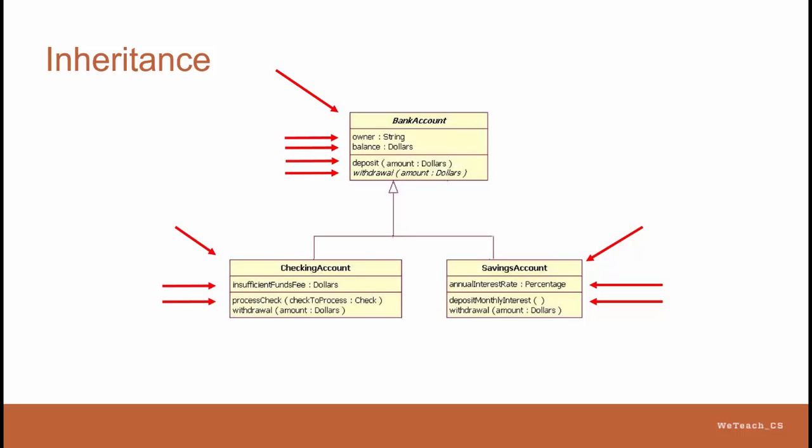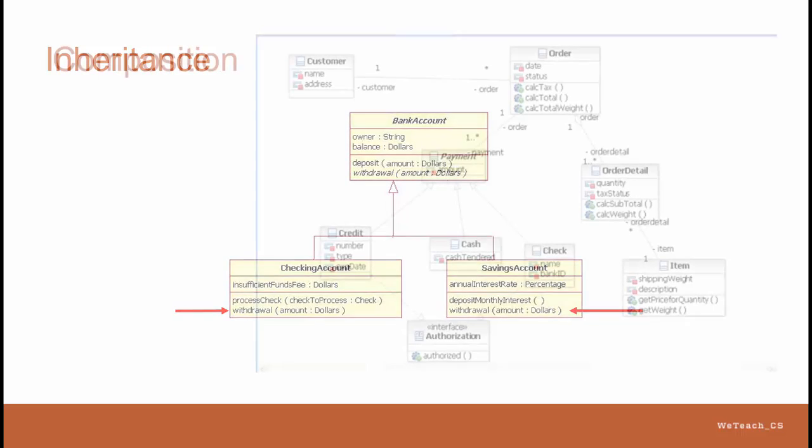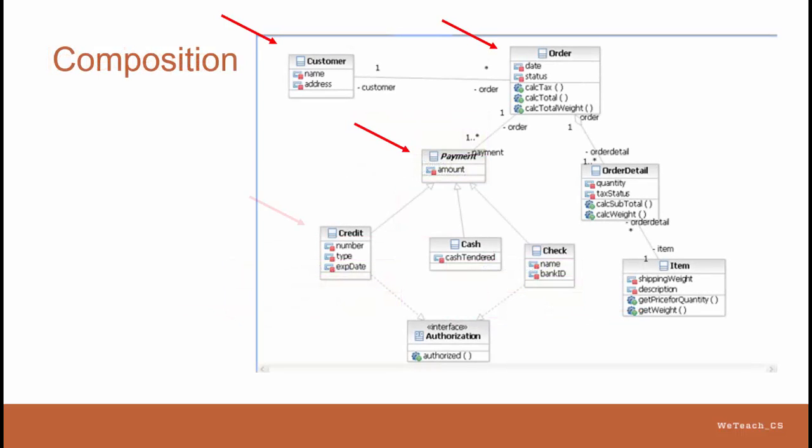Notice also that both new account types override or redefine the withdrawal process, since the way that is done is different for each account, but the process name is the same as the one inherited from the basic account. Another UML diagram we looked at earlier was this one, a complex combination of objects.